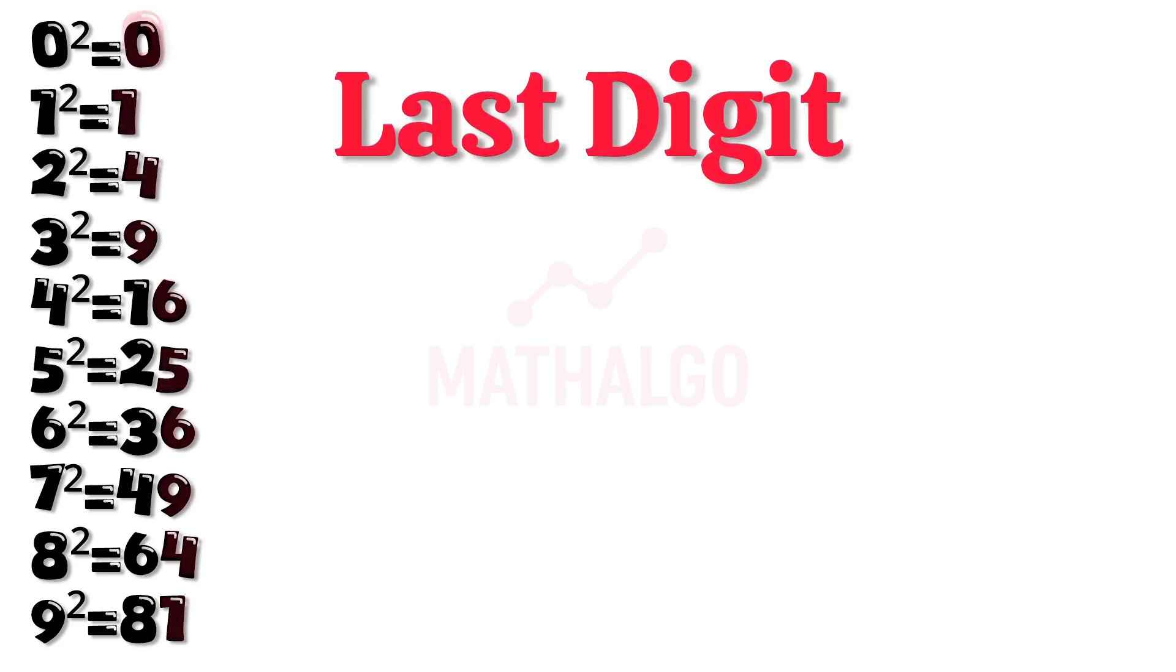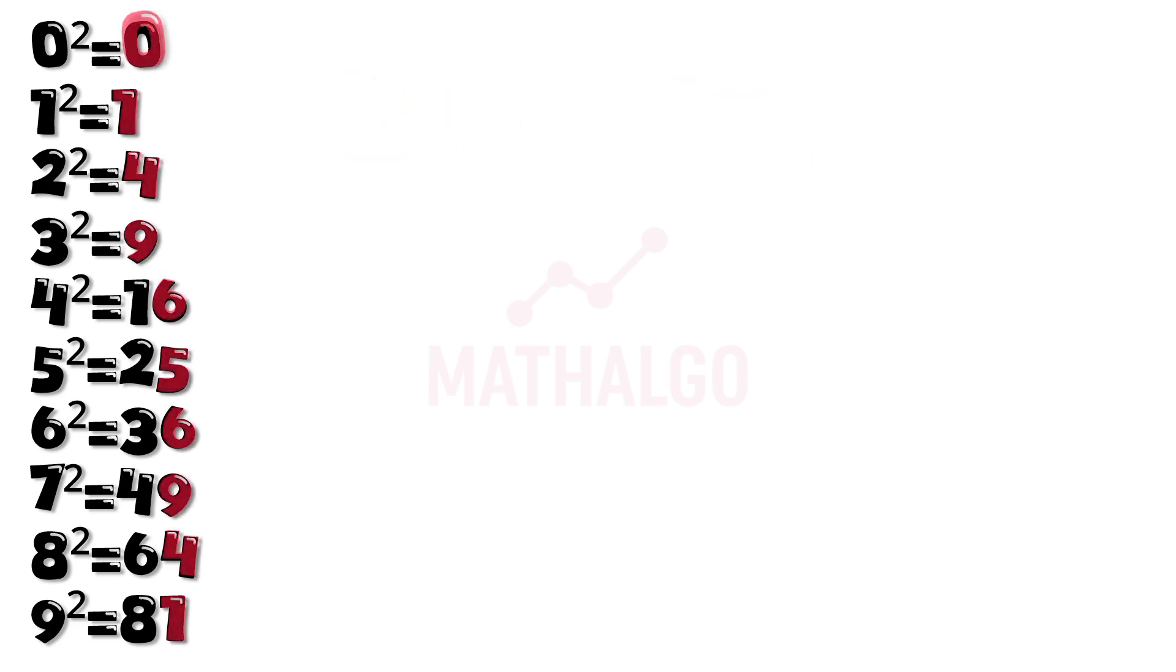Now, take a look at the last digits of these results. Some of them are the same, aren't they? For example, both 4 squared and 6 squared. Let's highlight those. There are only two numbers that have unique ending digits, 0 and 5.